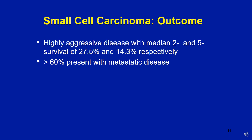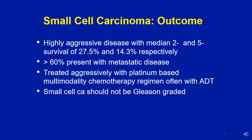More than half of these patients typically present with metastatic disease. Because of high proliferation, these tumors are treated aggressively with platinum-based multimodality chemotherapy regimens, which may or may not be combined with androgen deprivation therapy depending on the other component of the tumor. An important point: high grade small cell neuroendocrine carcinoma should not be provided a Gleason grade.